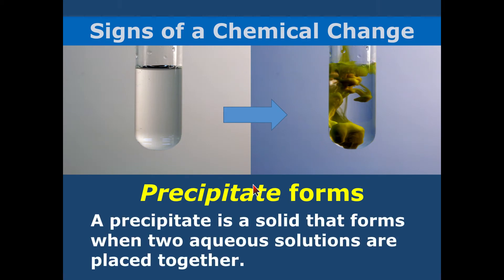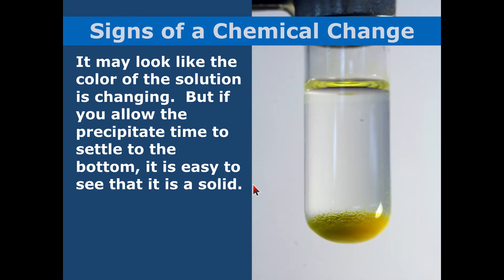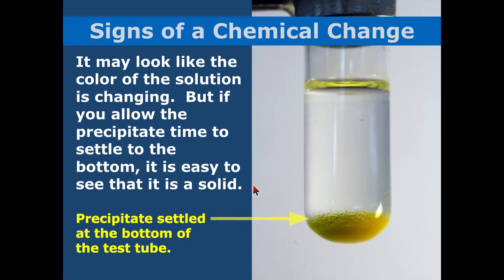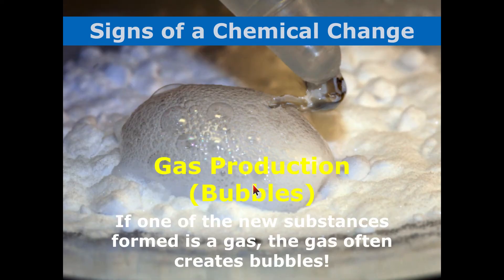There's the precipitate again — evidence of chemical change, evidence that a new substance is formed. There are your bubbles. On the STAR test, you can always look for bubbles as one of your answers when it asks about the evidence of chemical change — just look for bubbles, mark that, and move along.